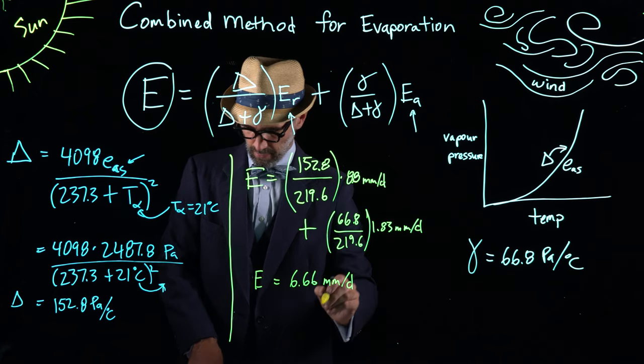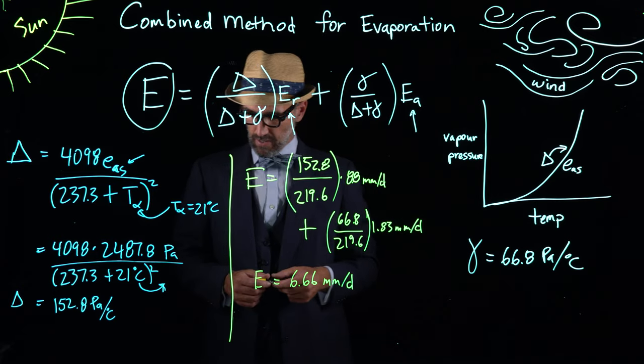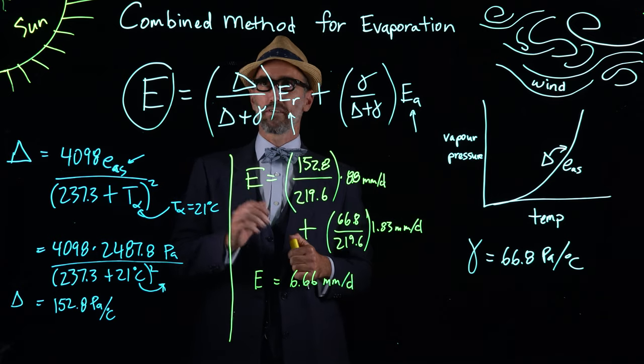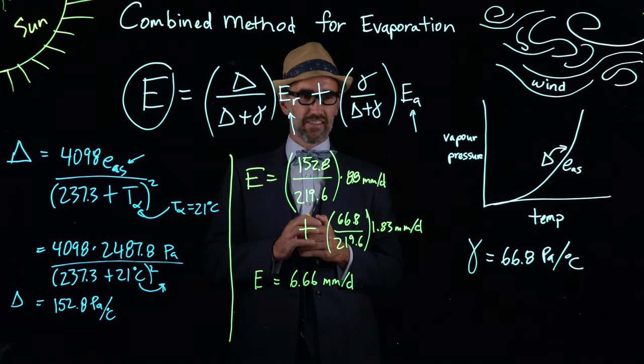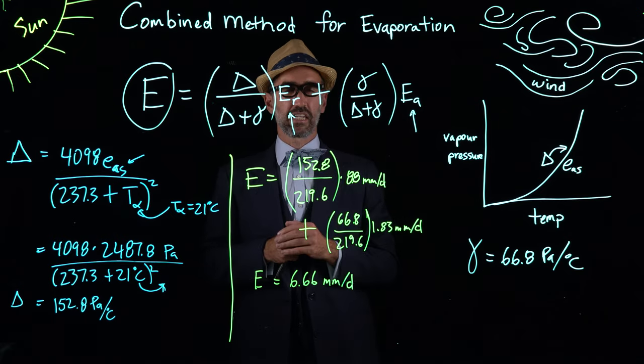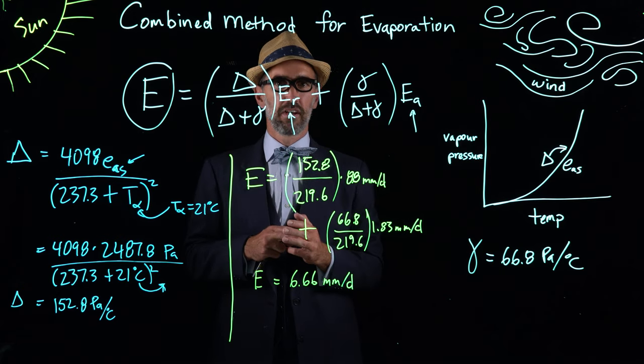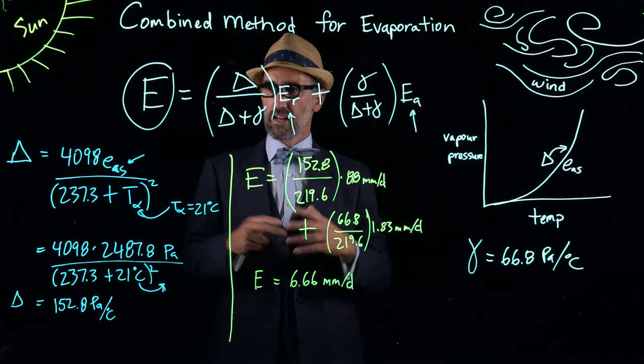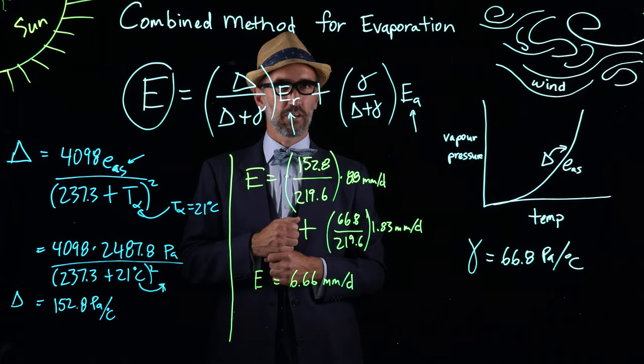What that suggests is that vapor transport is more important and vapor transport dominates in this example calculation that we made of Phoenix. Now we've learned three different methods for calculating evaporation. I hope you can go out into the world and calculate evaporation for any lake, reservoir, or soil.